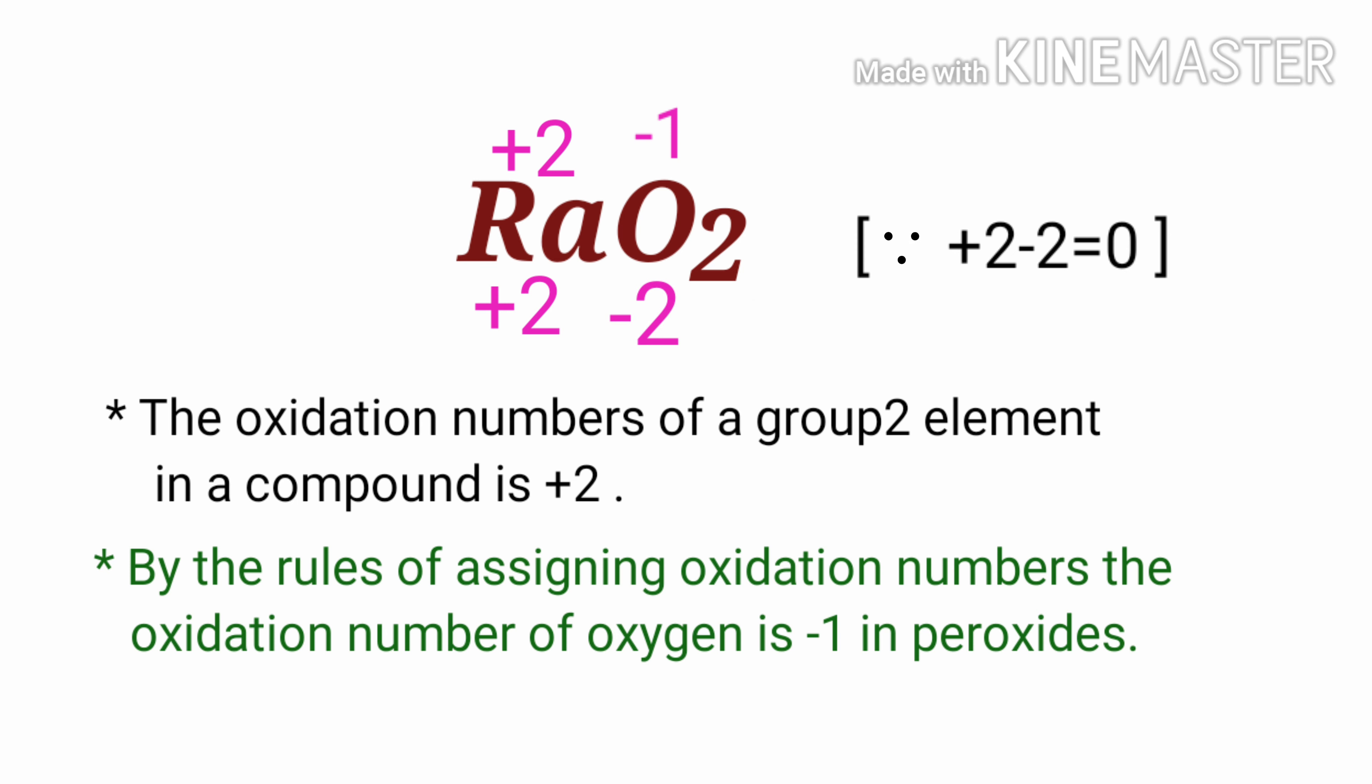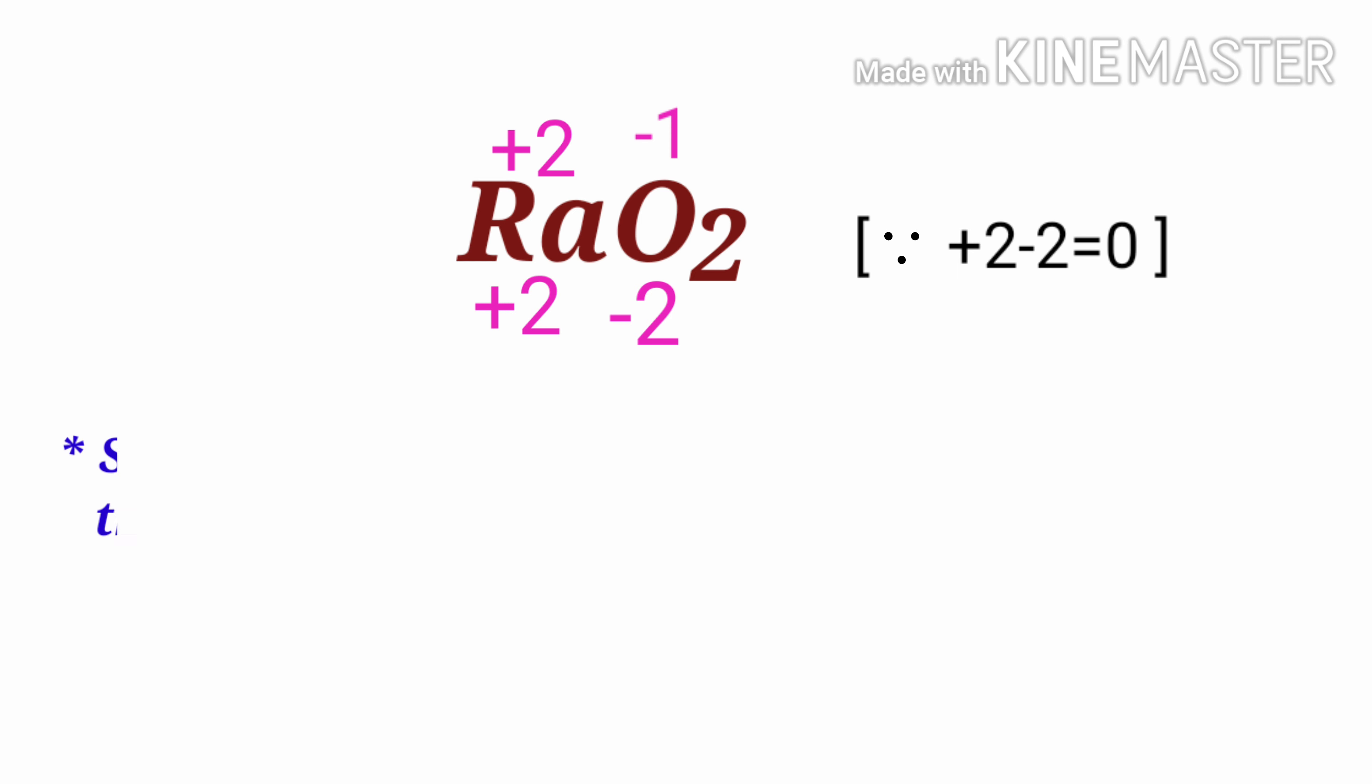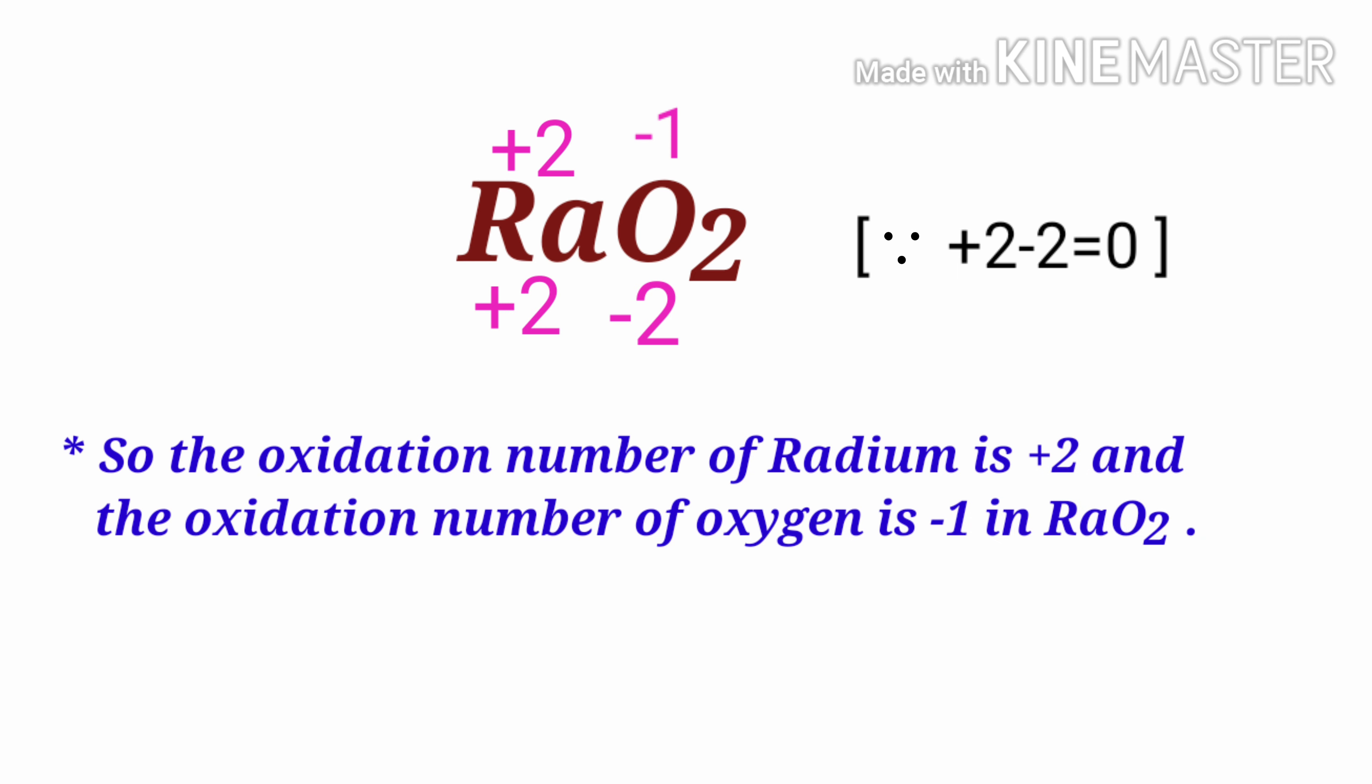Therefore, the sum of the oxidation number of atoms in radium peroxide is equal to zero. So the oxidation number of radium is +2 and the oxidation number of oxygen is -1 in radium peroxide.